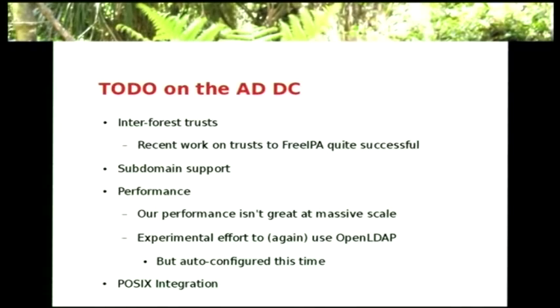Still to do on the Active Directory Domain Controller: Interforest Trusts. We're getting close — there's been some successful work doing Interforest Trusts between FreeIPA and Samba 4, which I'm very excited about. Sub-domain support is coming along soon. We're going to work on performance — our performance isn't great at very large scale, so there's the OpenLDAP effort I described earlier. And still to do is better POSIX integration, because that's where we really need to go with the DC.